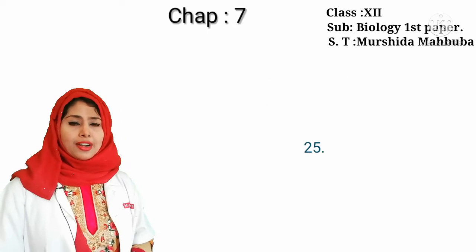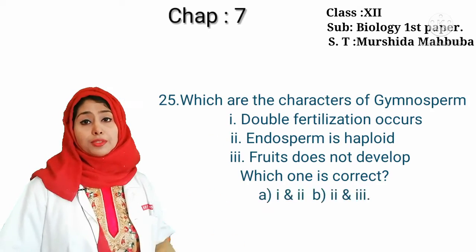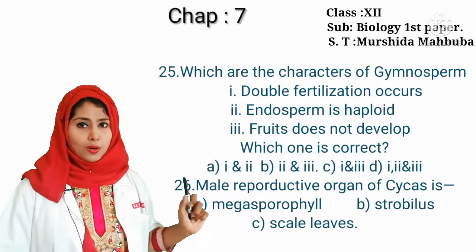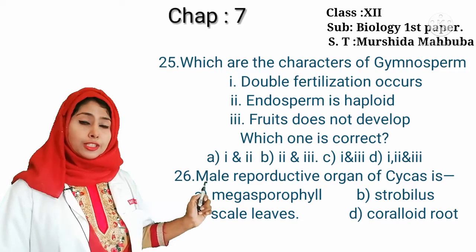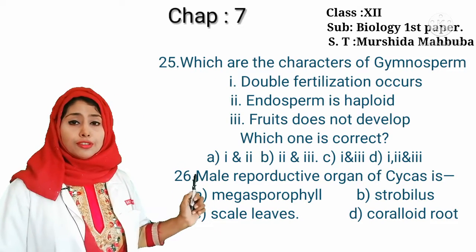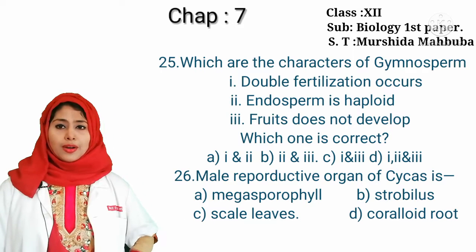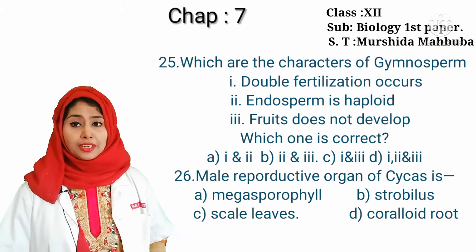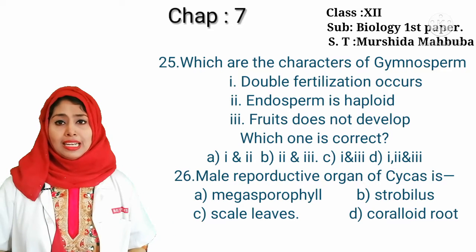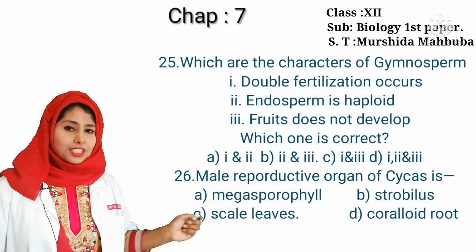Our next question: which are the characters of gymnosperm — double fertilization occurs, endosperm is haploid, fruit doesn't develop? Double fertilization does not occur in gymnosperm, so that is not correct. Endosperm is haploid — yes, correct. Fruit doesn't develop — also correct. So the correct answer is 2 and 3.